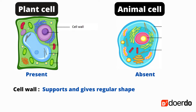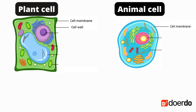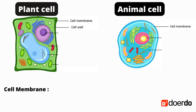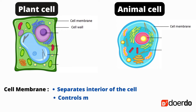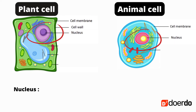In an animal cell, the cell wall is absent. The cell membrane is present in both plant cells and animal cells. The cell membrane separates the interior of the cell from the outside environment and controls the movement of materials entering and exiting the cell.